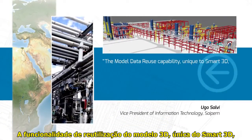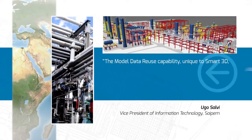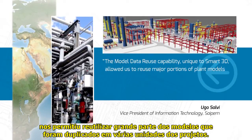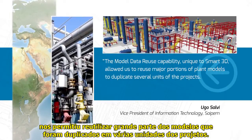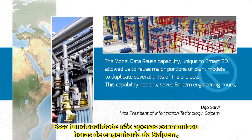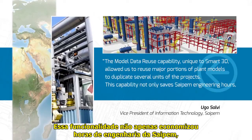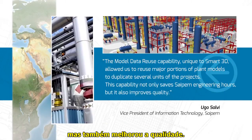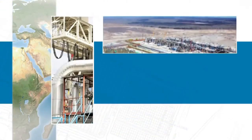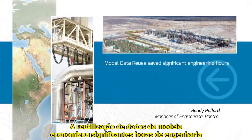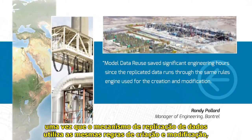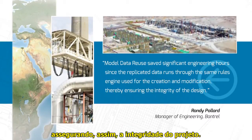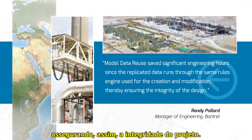The model data reuse capability, unique to Smart 3D, allows us to reuse major portions of plant models to duplicate several units of the projects. This capability not only saves SCI-PAM engineering hours but also improves quality. Model data reuse saves significant engineering hours since the replicated data runs through the same rules engine used for creation and modification, thereby ensuring the integrity of the design.